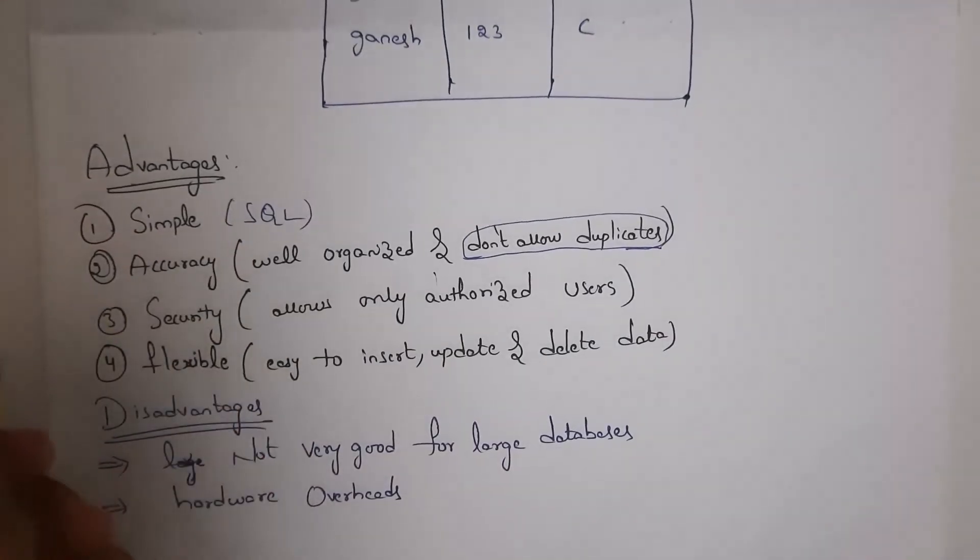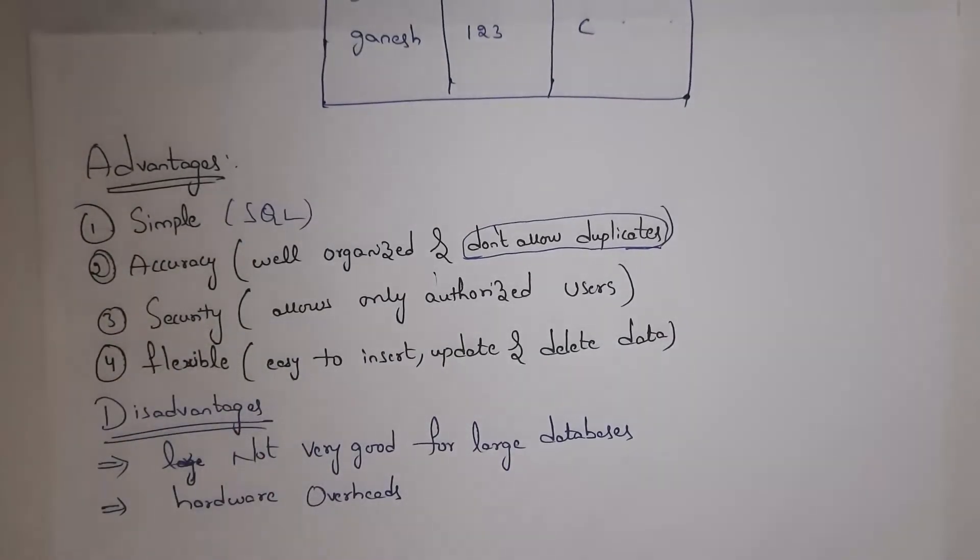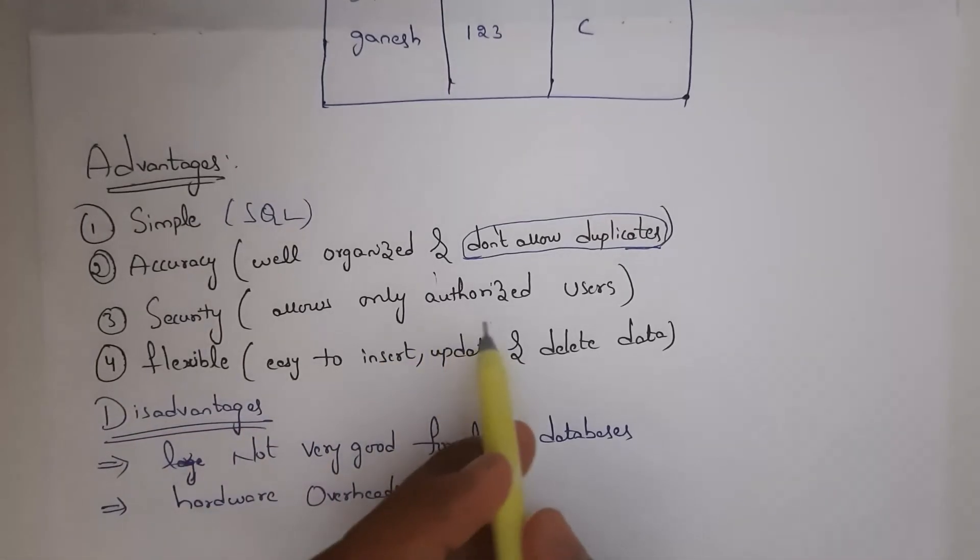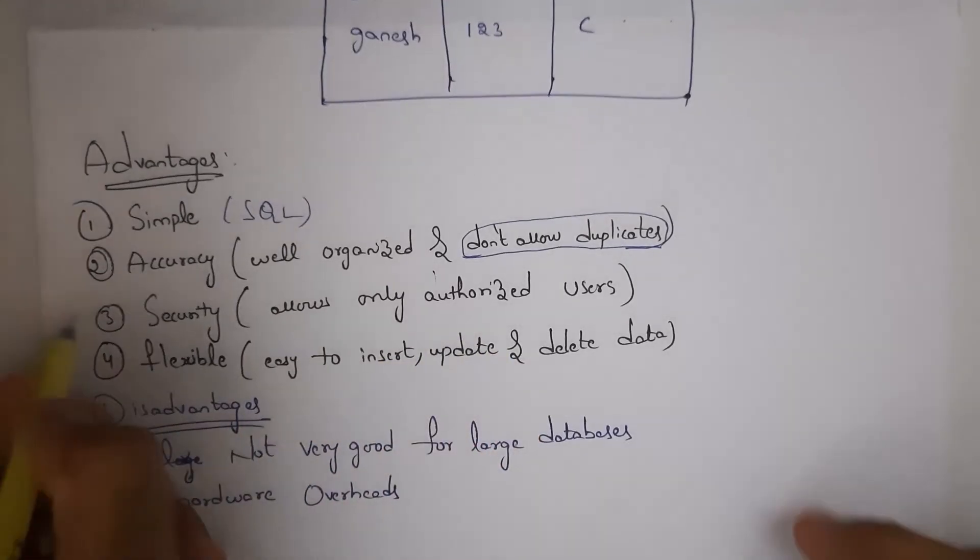Next advantage is security. Relational model contains various access permissions and we can keep password to our database. So only authorized users can access database. That is why this relational model is secure.